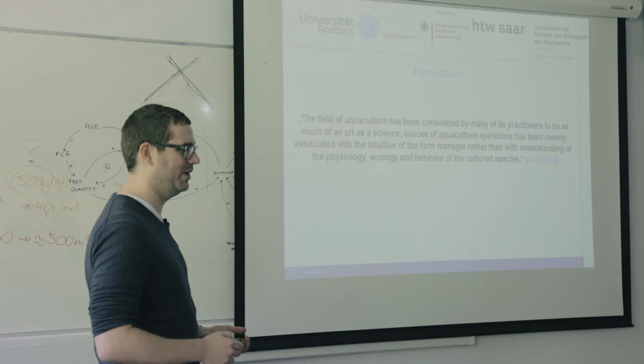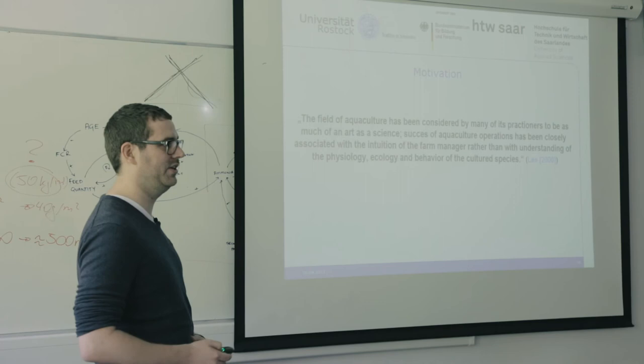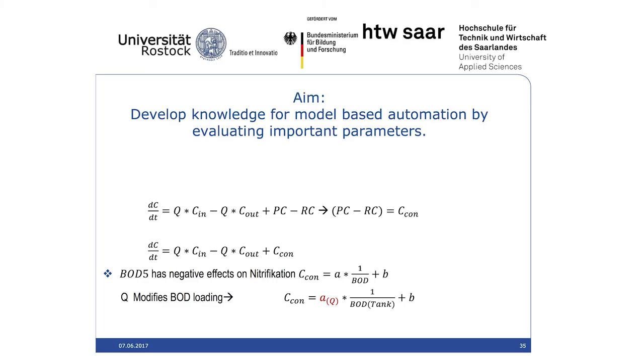This is not how we want to do it in the future, so automation has to step in. But to do this, the automation actually has to be smart. It has to know what is going on, the demand of the fish, how much flow we need — and this can only be achieved with a model.